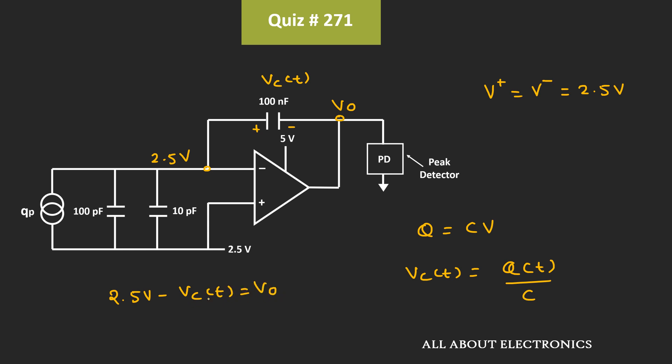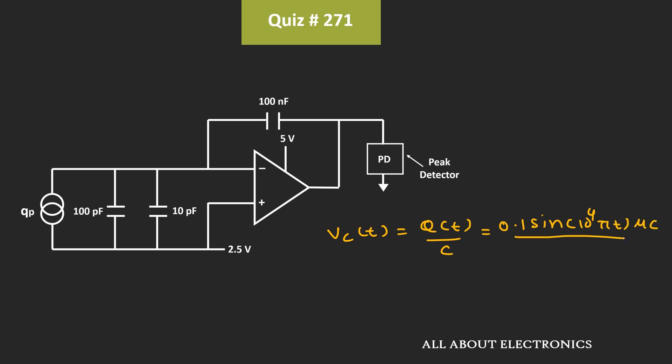To find the output voltage, we need to find the waveform of this Vc. That means this voltage Vc is equal to Q divided by C, where this Q is the charge which is generated by this piezoelectric sensor. That is equal to 0.1 times sin 10 to the power 4 times πt microcoulomb divided by C. That is equal to 100 nF.